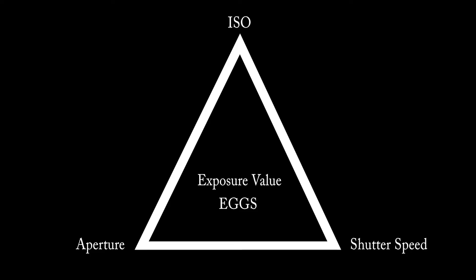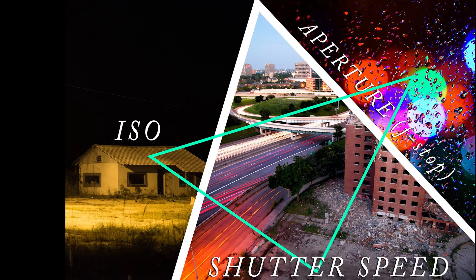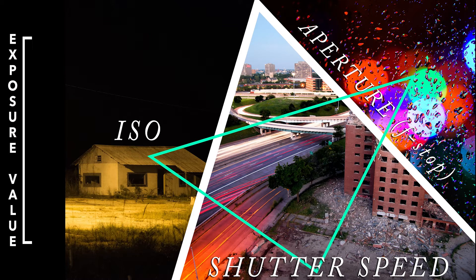Let's start with the exposure triangle. What is the exposure triangle? Simply put, the exposure triangle lays out for us the three fundamental elements of exposure: aperture, shutter speed, and ISO. A combination of these three elements makes up a value known as an exposure value, or EV.